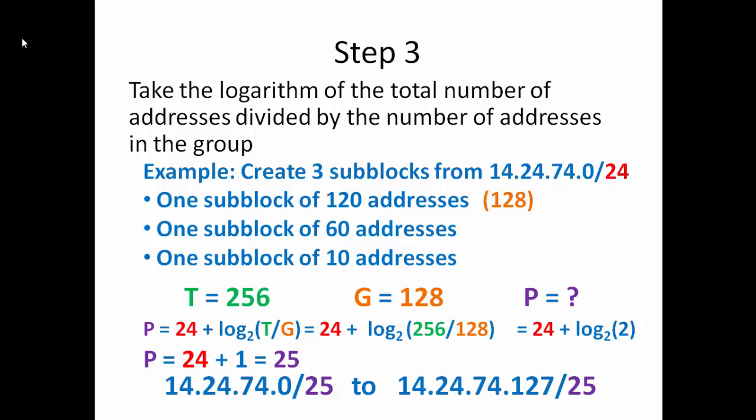That gives us a prefix of 25 and a starting address of 14.24.74.0/25. That is our starting address. It is not our first usable address. Our first usable address would be 1 up from that, or 14.24.74.1. The starting address is the network address. And then we're going to go up to 14.24.74.127. So we do have a total of 128 addresses there.